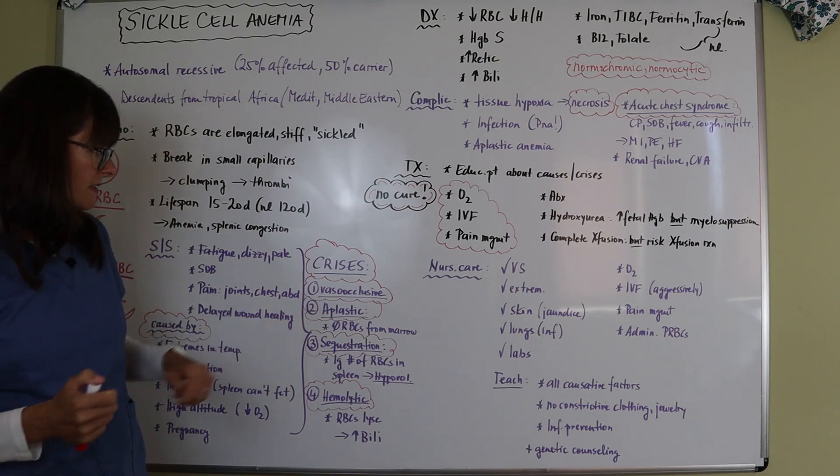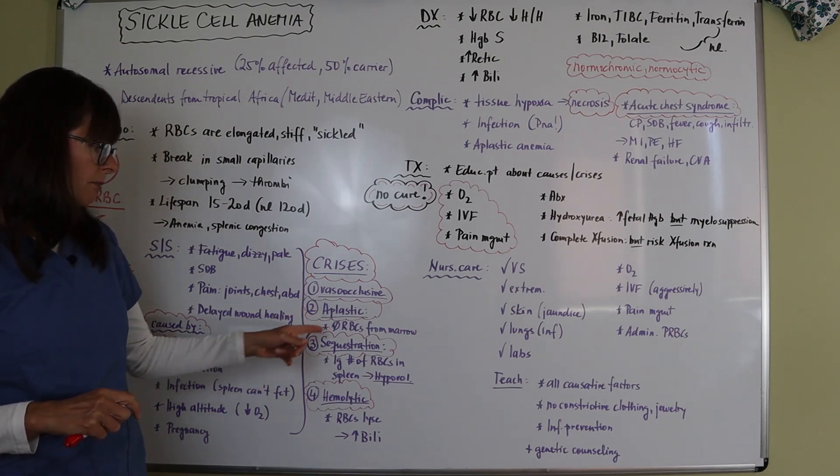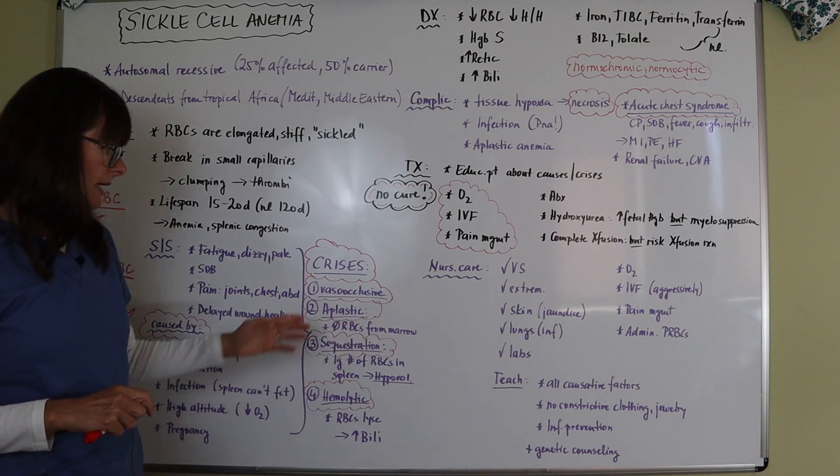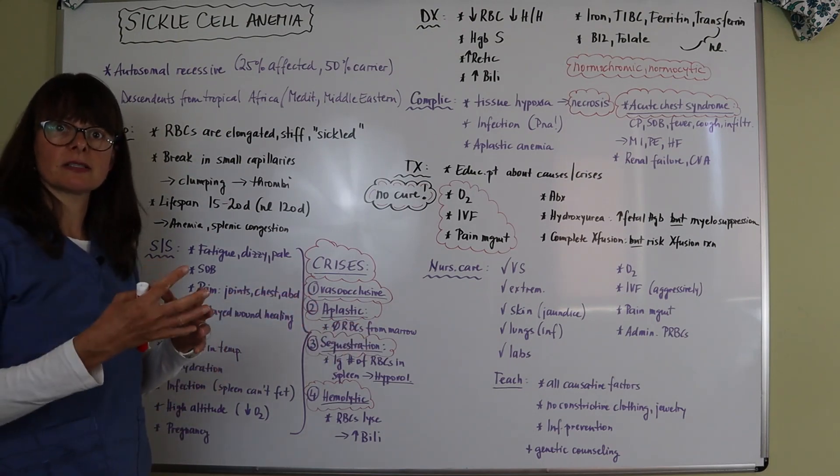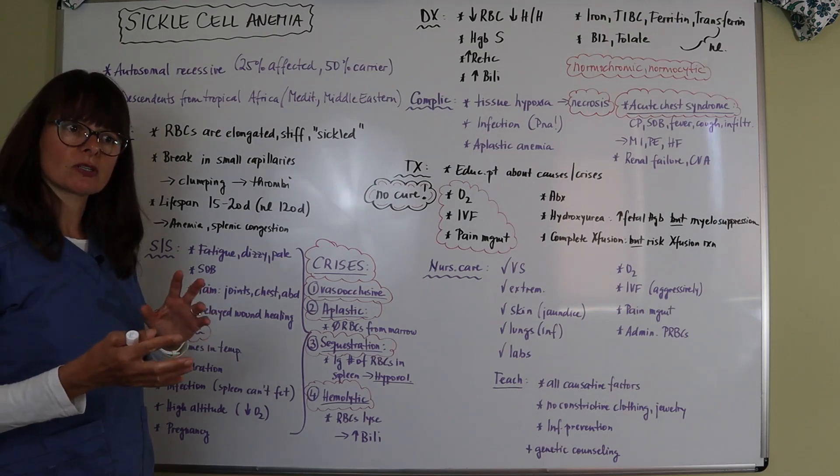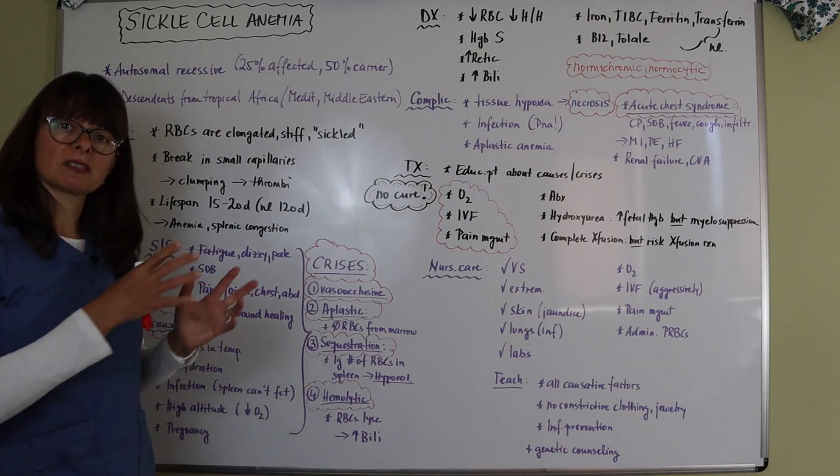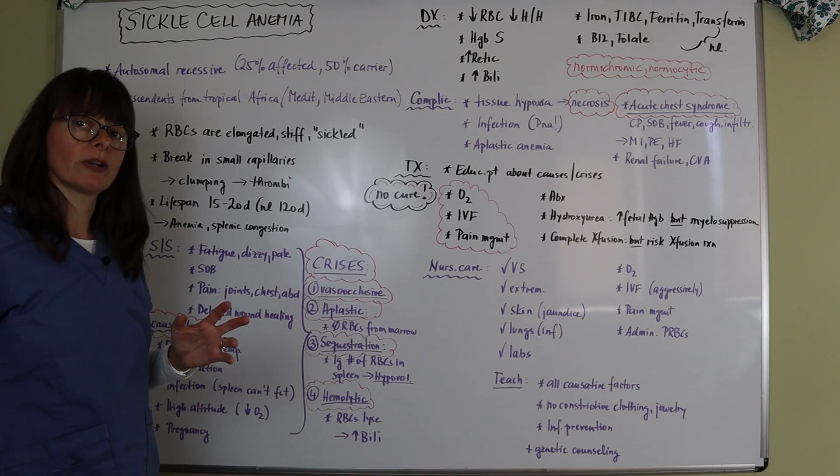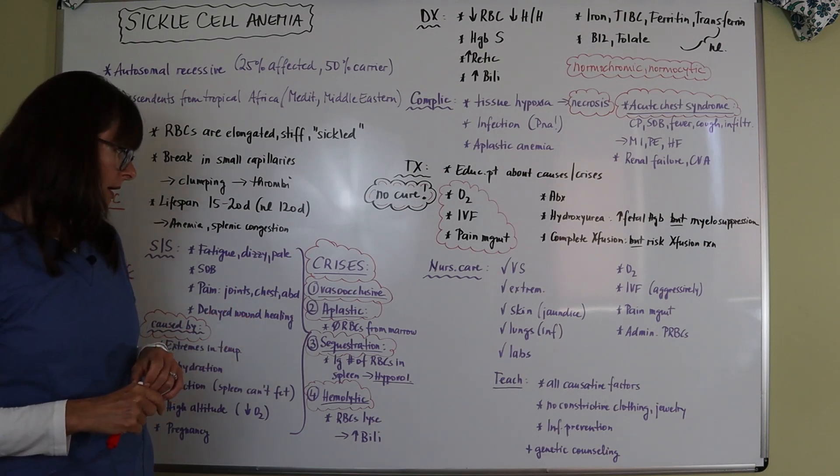And then we have the aplastic crisis, which means that now there are no red blood cells being produced from the bone marrow. So now in addition to sickle cell disease, we're also having aplastic anemia, but sickle cell is the cause here rather than whatever else can cause aplastic anemia.